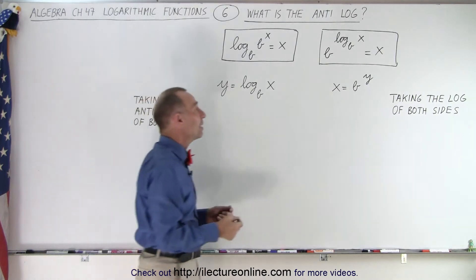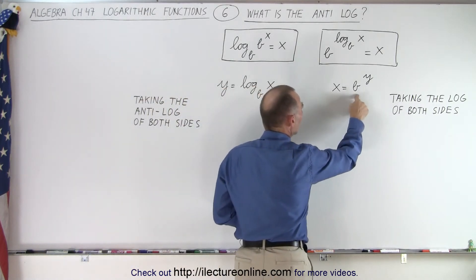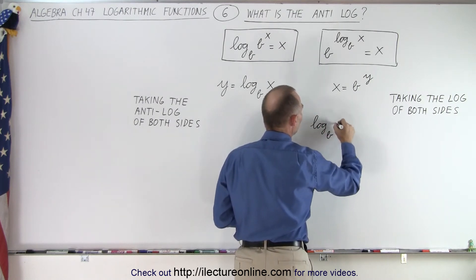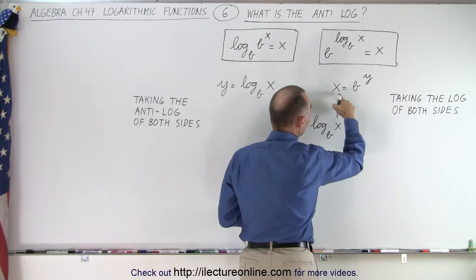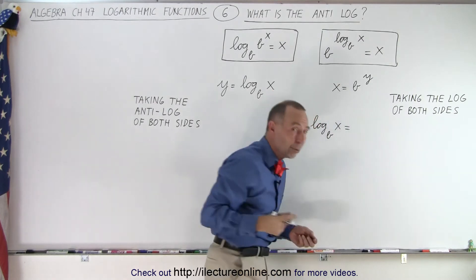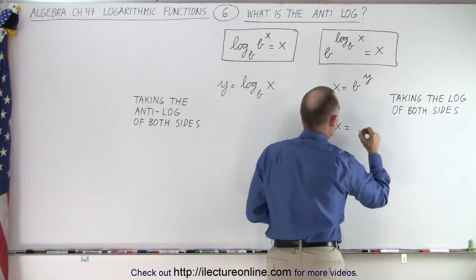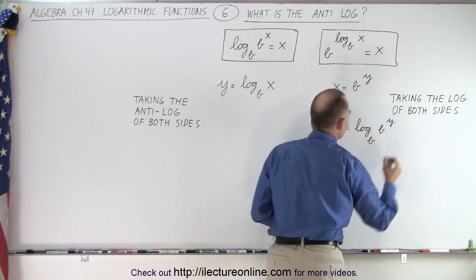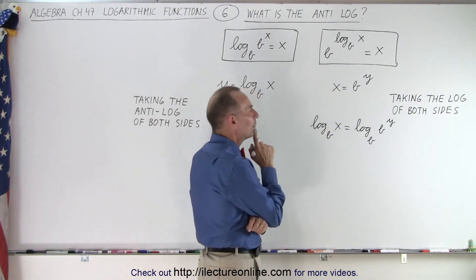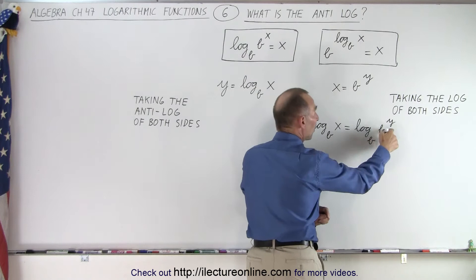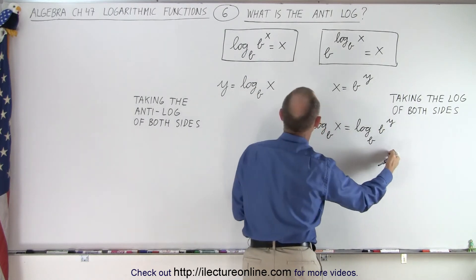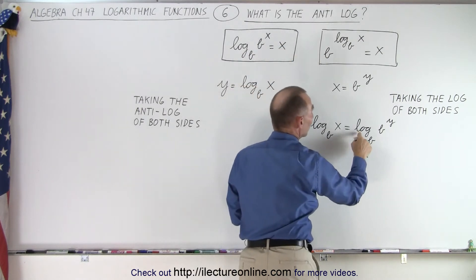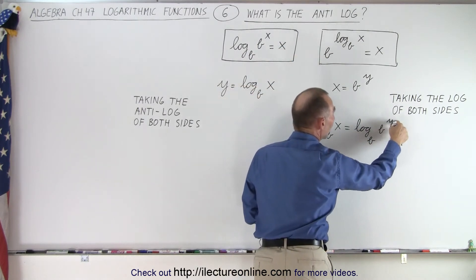Taking the log of both sides simply means we take the log of the left side and the log of the right side. So on the left side, we end up with the log base b of x. And since x equals b to the y, if we take the log of both sides, we get the log base b of b to the y. Remember, when we take the log base b of b to the y, we simply get y back — that's the rule.